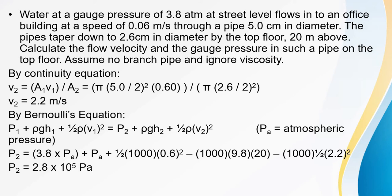To find the cross-sectional areas, use A = πr². For the bottom pipe: π × (5/2)² cm² with velocity 0.06 m/s, divided by the top pipe area π × (2.6/2)² cm². Simplifying gives the velocity at the top floor as 2.2 meter per second.